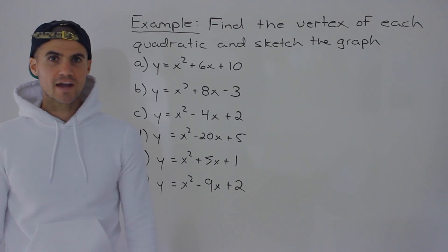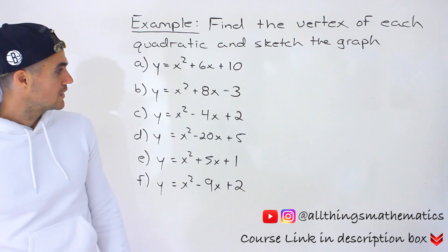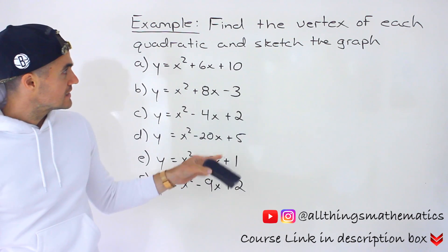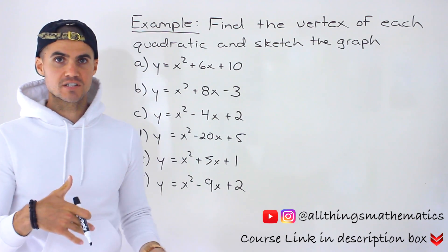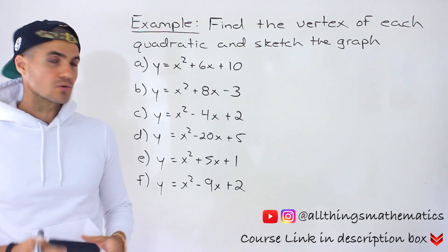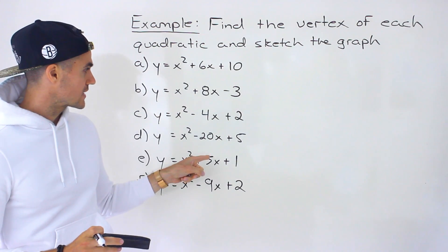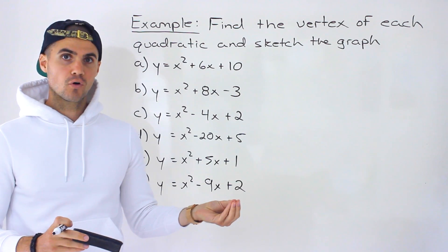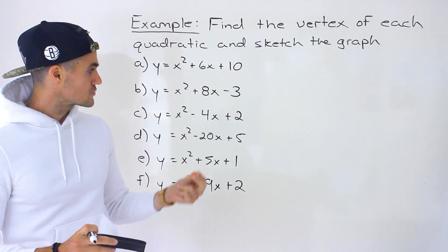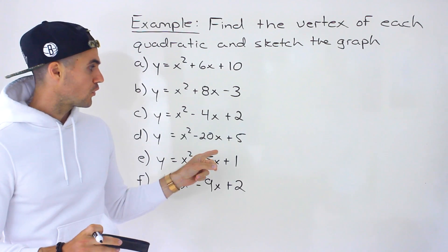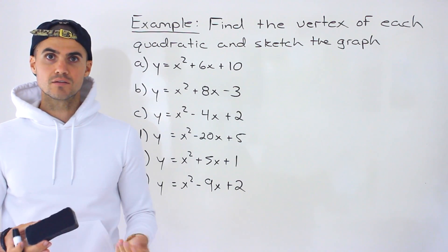Welcome back. Moving on to the next example — we need to take these quadratics, find the vertex of each one, and then sketch the graph. All of these quadratics are in standard form, so to find the vertex we're going to convert from standard form to vertex form by completing the square.